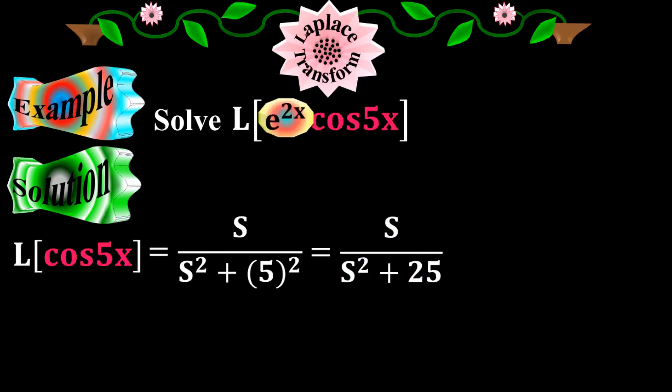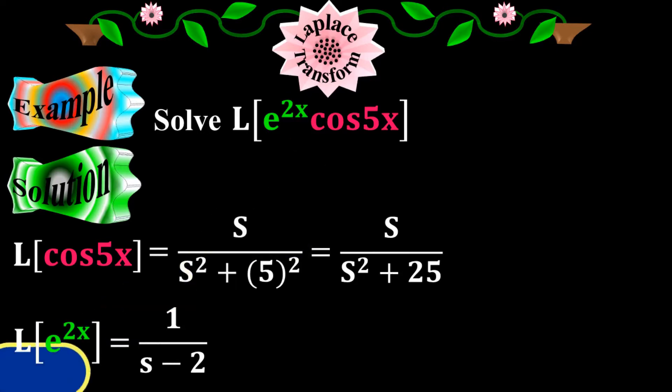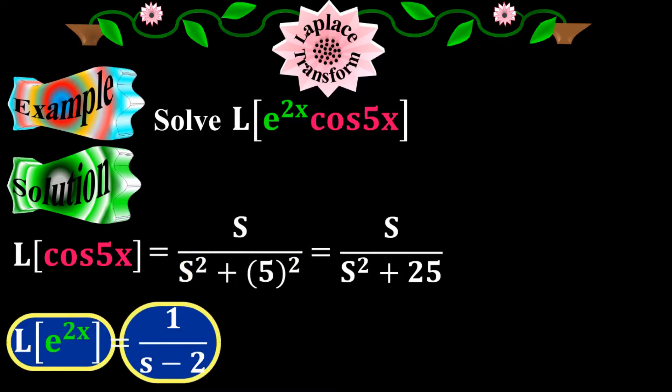Now I'm going to take the exponential function e to the 2x, where the Laplace of e to the 2x equals to 1 over s minus 2. I applied the second elementary condition here, where my constant a is 2. So Laplace of e to the 2x equals to 1 over s minus 2.